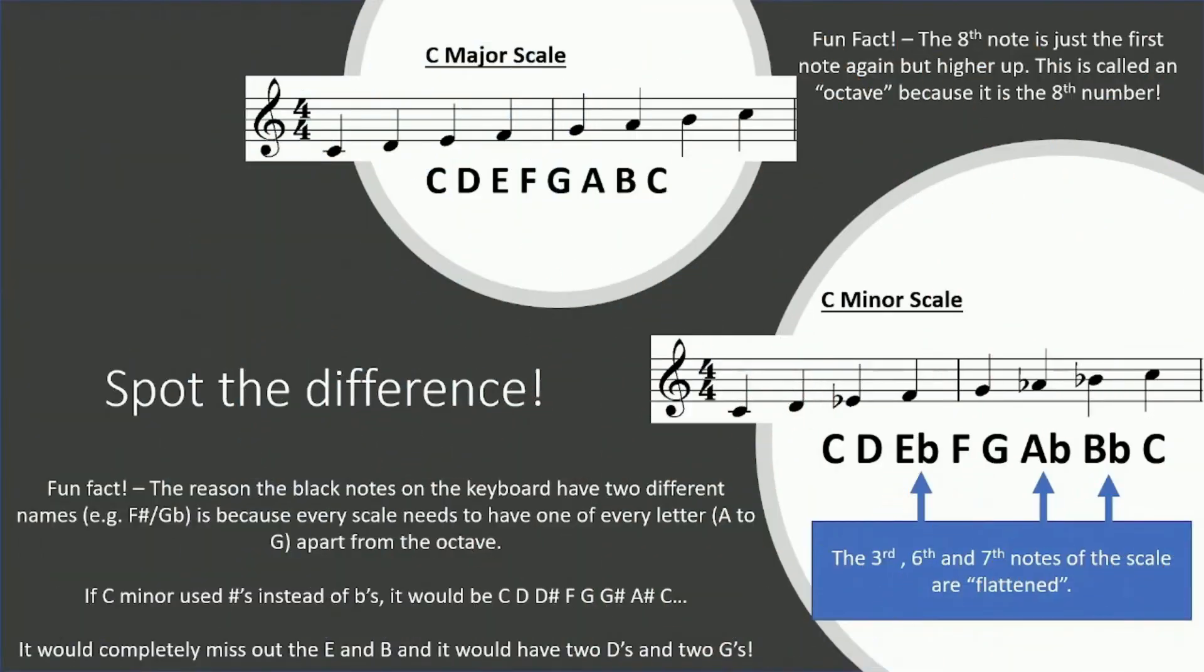Now the C major scale and the C minor scale are both here so we can analyze them a little bit more closely. Have you spotted the difference? If not, here it is. The third, sixth, and seventh notes of the scale are flattened in C minor compared to the C major scale. They're called the third, sixth, and seventh degrees of the scale: first, second, third, fourth, fifth, sixth, seventh degrees of the scale. The third, sixth, and seventh are flattened.